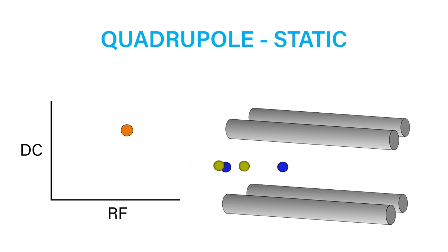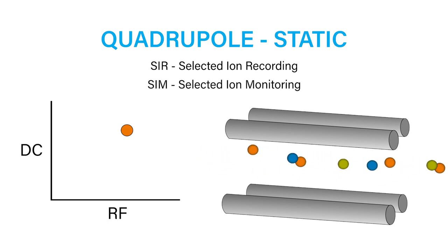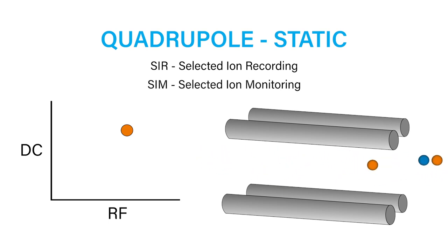This is the most common mode used in quantitative analysis since it is the most sensitive and additional information is not needed. On a single quad, this is called SIR or Selected Ion Recording. This mode may also be called SIM or Selected Ion Monitoring.